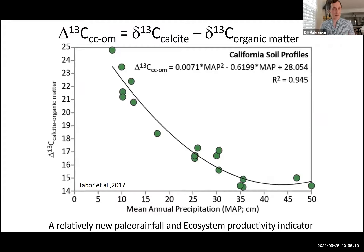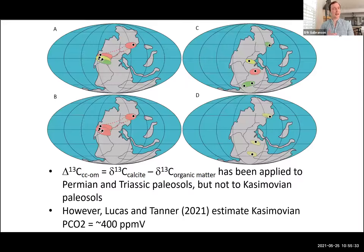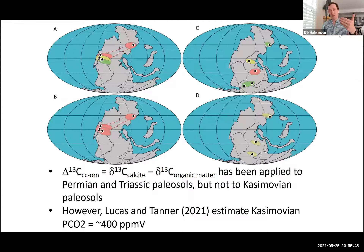Other proxies we might use include stable isotope values of calcite nodules in soils and occluded organic matter — in the carbonate nodules themselves this can give a measure of mean annual rainfall, a proxy from Neal Tabor. This has been applied to Permian-Triassic successions but not yet to the Casimovian, and it's readily available to apply to Casimovian environments in both paleo-equatorial Pangea and Gondwana. We can also use stable isotope geochemistry of phyllosilicates.